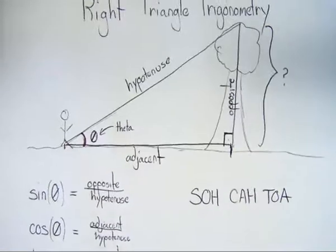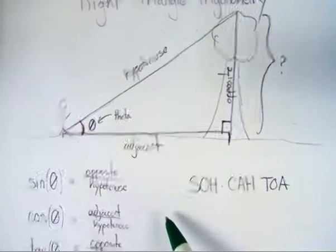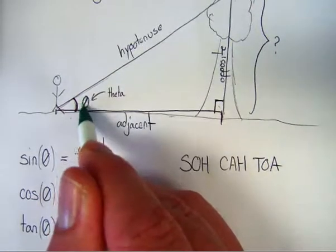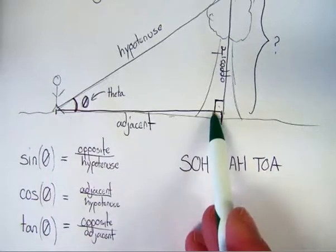Now, our initial problem was how do we find the height of this tree? Let's talk about how that works in light of what we know now. I said I can measure theta, and I can measure my distance from the tree.